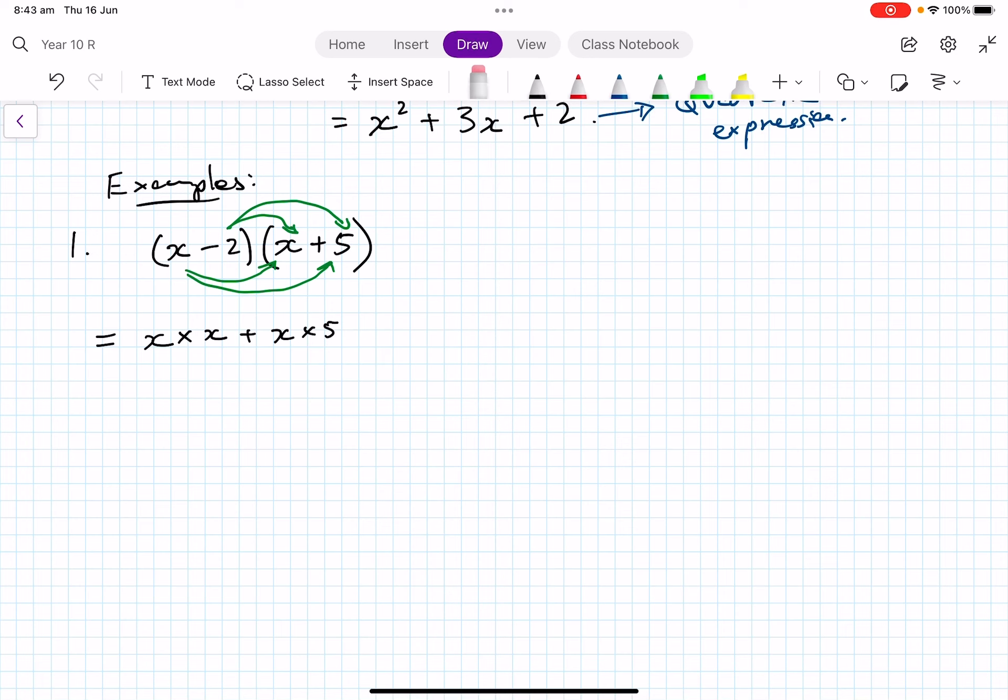Now the next one is important. We've got minus 2 here. Minus 2 times x, that's what we do. Minus 2 times x and then minus 2 times 5. If I do the work on this, x squared plus x times 5 is 5x minus 2 times x is minus 2x and then minus 2 times 5 is minus 10. So we're expanding it out, which is equal to x squared plus 3x minus 10 because 5x minus 2x is 3x.